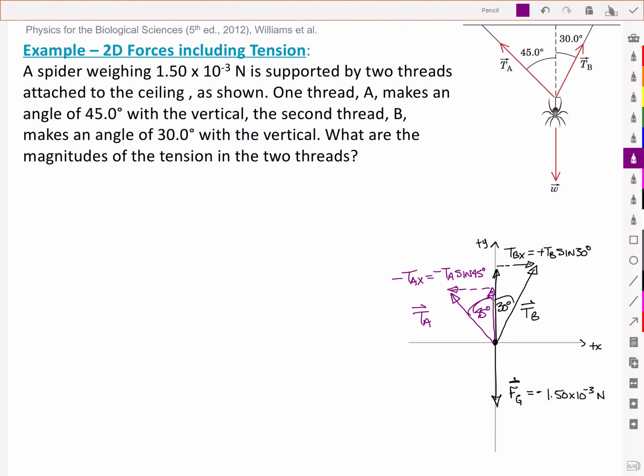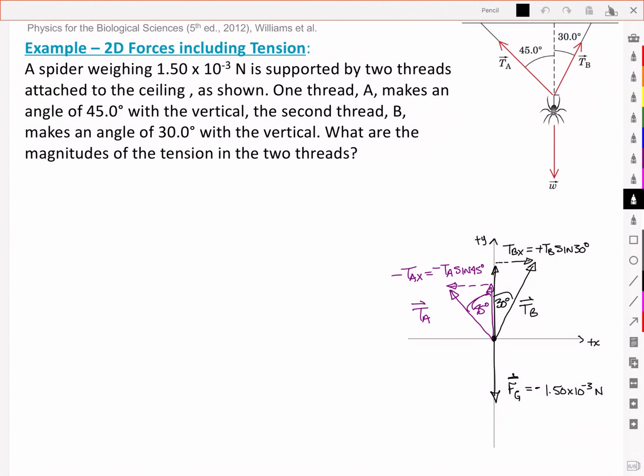And just for clarity I'll put that it's a negative Tax because it's acting in the negative direction. Let's again look at the sum of the components. So the sum of my x components, and I'm presuming it's in equilibrium so I'm setting them equal to zero.